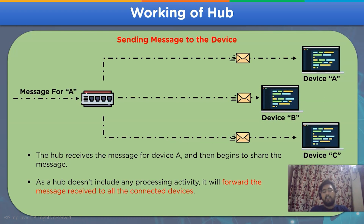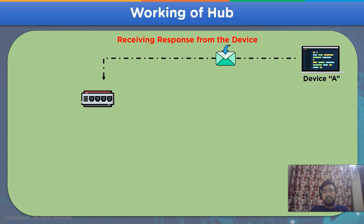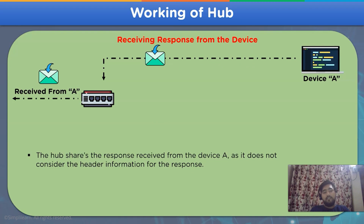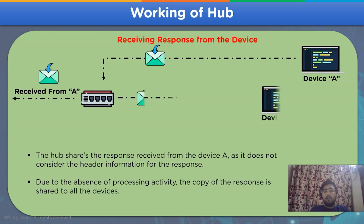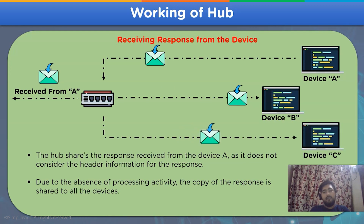Now let's move on to the second scenario, which is when receiving a response from the device. When device A shares a response to the hub to be sent to the sender device, it will share the same response to all other connected devices again, due to the same reason — the lack of any processing unit or intelligent point in the network channel.